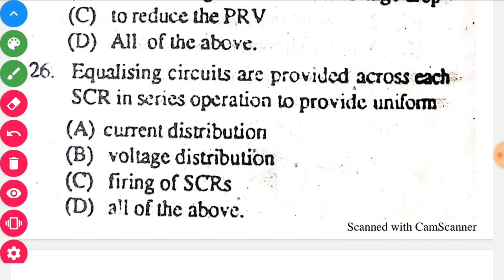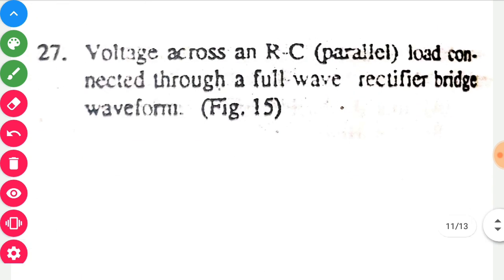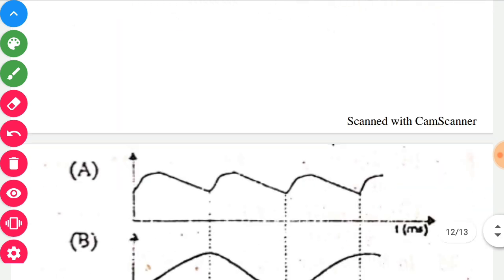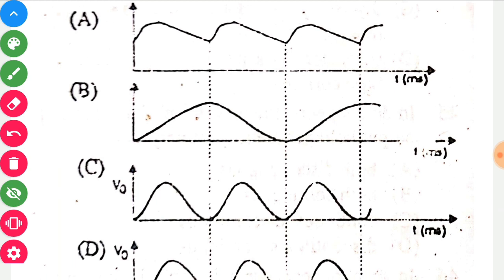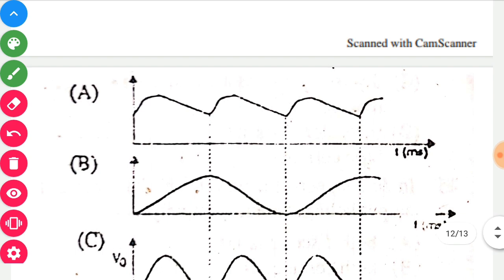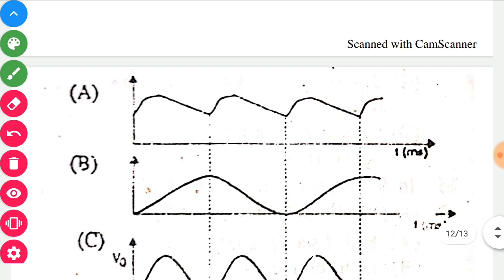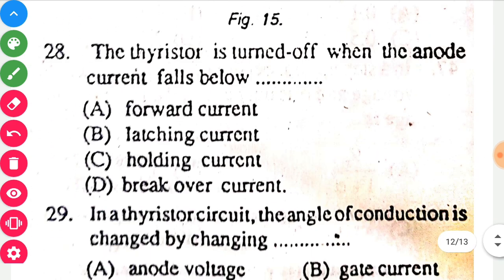Voltage across an RC load connected through a full-wave rectifier bridge has waveform — I will go with option A, because we can see the charging and discharging of the capacitor in the waveform of option A.